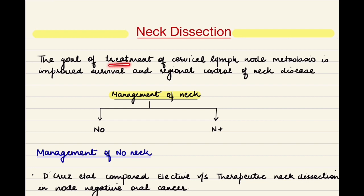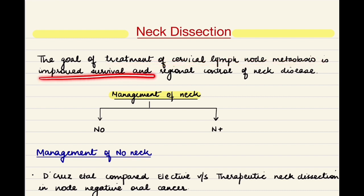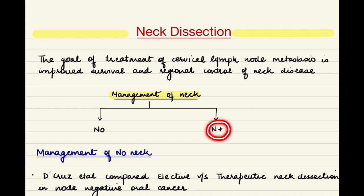The goal of treatment of cervical lymph node metastasis is improved survival and regional control of neck disease. We will see the management of the neck under two headings: management of the N0 neck, when there is no cervical metastasis, and the N-positive neck, when there is presence of cervical metastasis or neck nodes. When neck nodes are present, there is basically no controversy — the neck has to be managed.